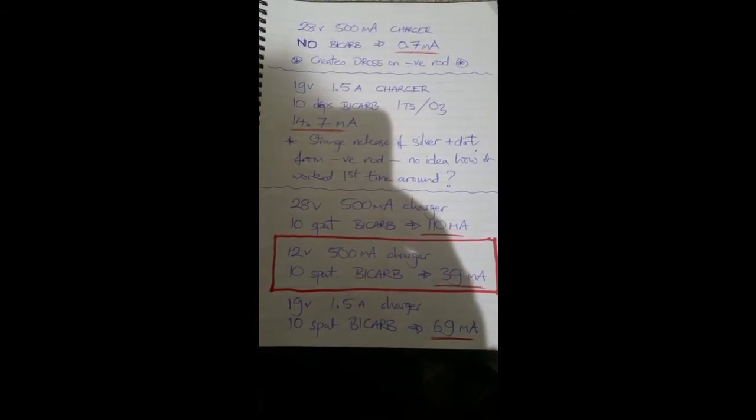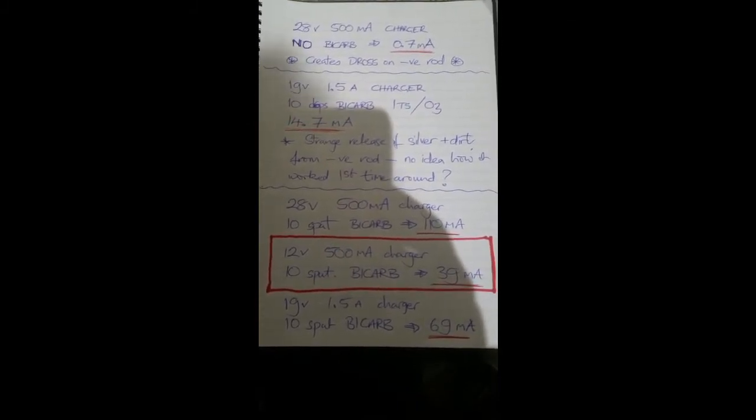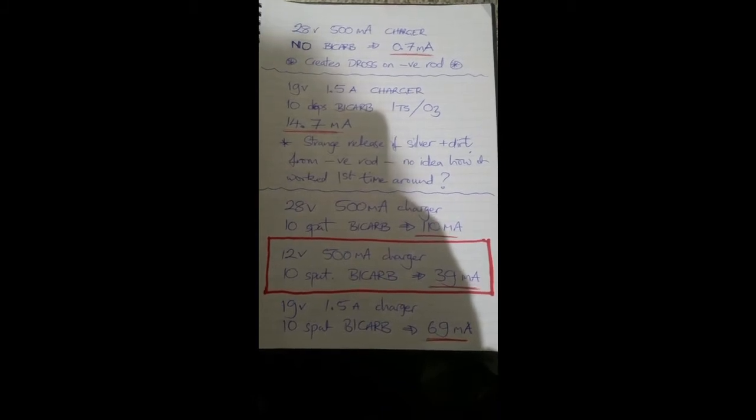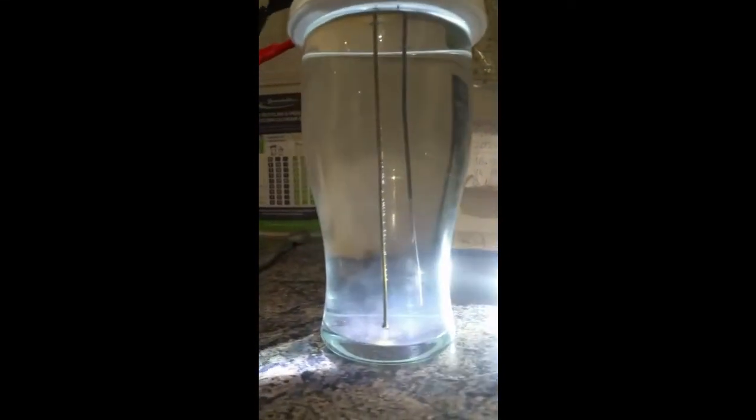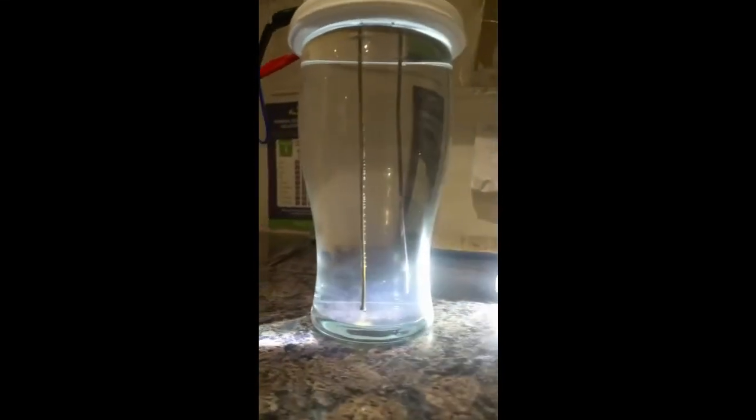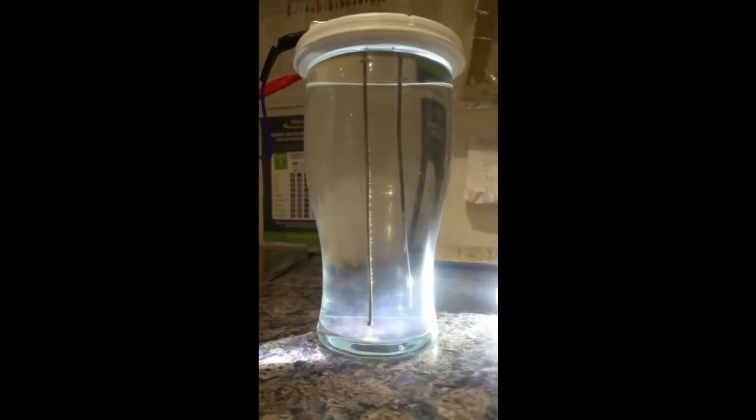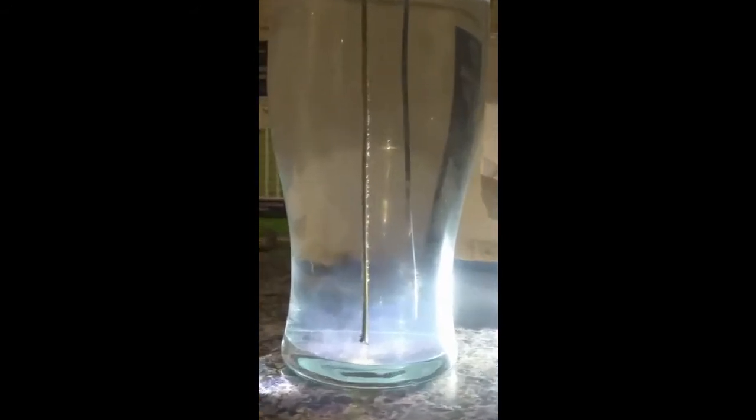What's desirable about this apparently is the low amperage and low current, which allegedly creates the smallest particle size and therefore is favored by certain individuals. Now it just so happens that behind me I have one of these examples running here. This is a 28 volt charger, 500 milliamps, positive and negative terminal into some pure distilled water with no bicarb added.